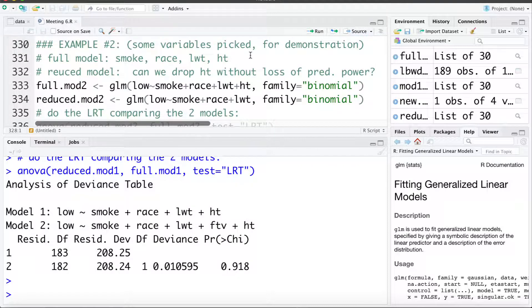Now let's look at another example. Again I've picked some variables just for the sake of discussion. Here we're going to look at a full model that has smoking, race, LWT, and HT, a family history of hypertension. And then we're going to test: can we drop HT from the model without loss of predictive power?